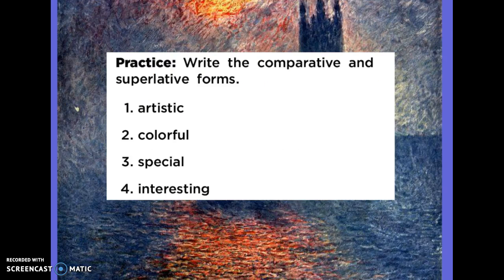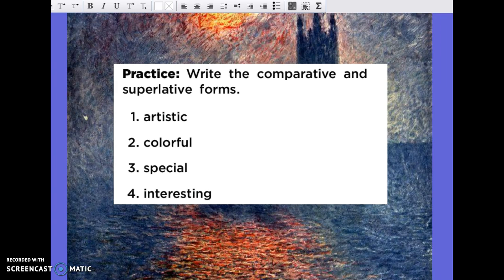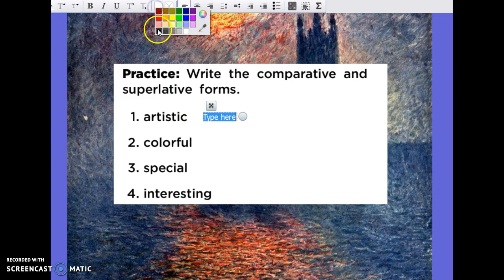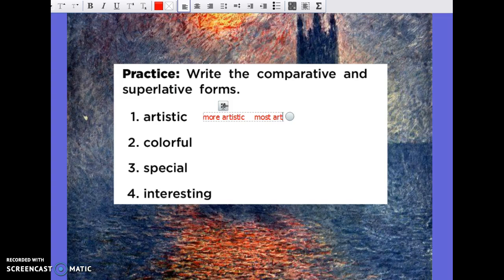Let's look at some examples. We write the comparative and superlative forms for artistic, colorful, special, and interesting. For artistic, we are no longer going to use artisticist or artistiker — we have to use more or most. For example, we might have more artistic, or we could have most artistic.